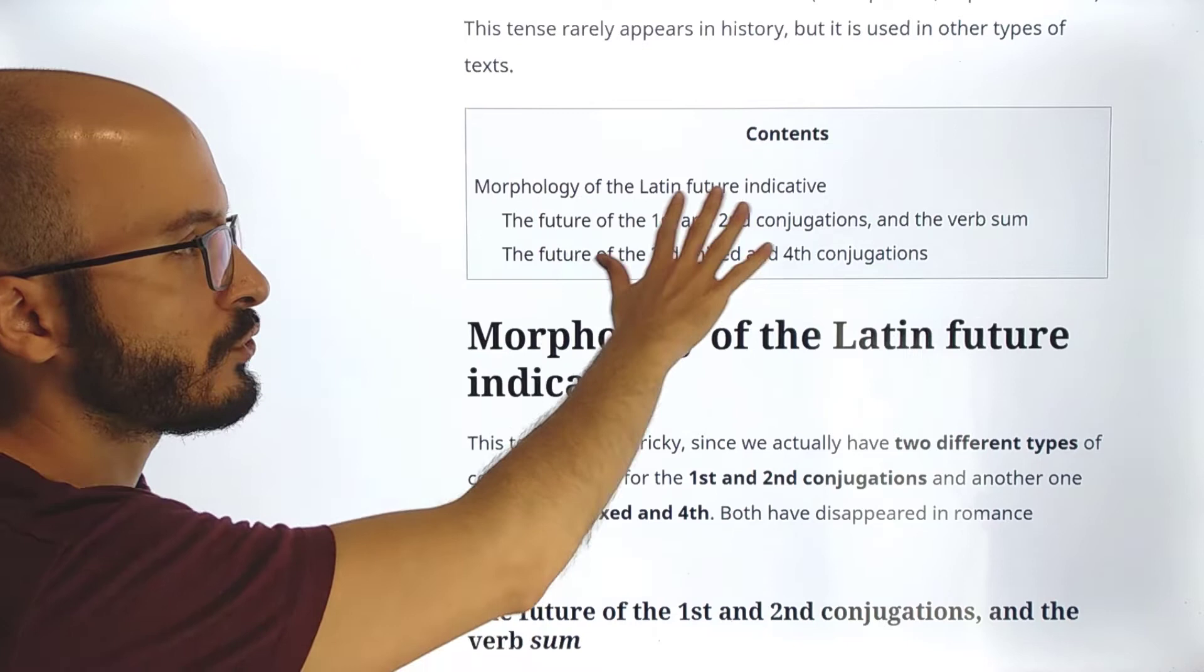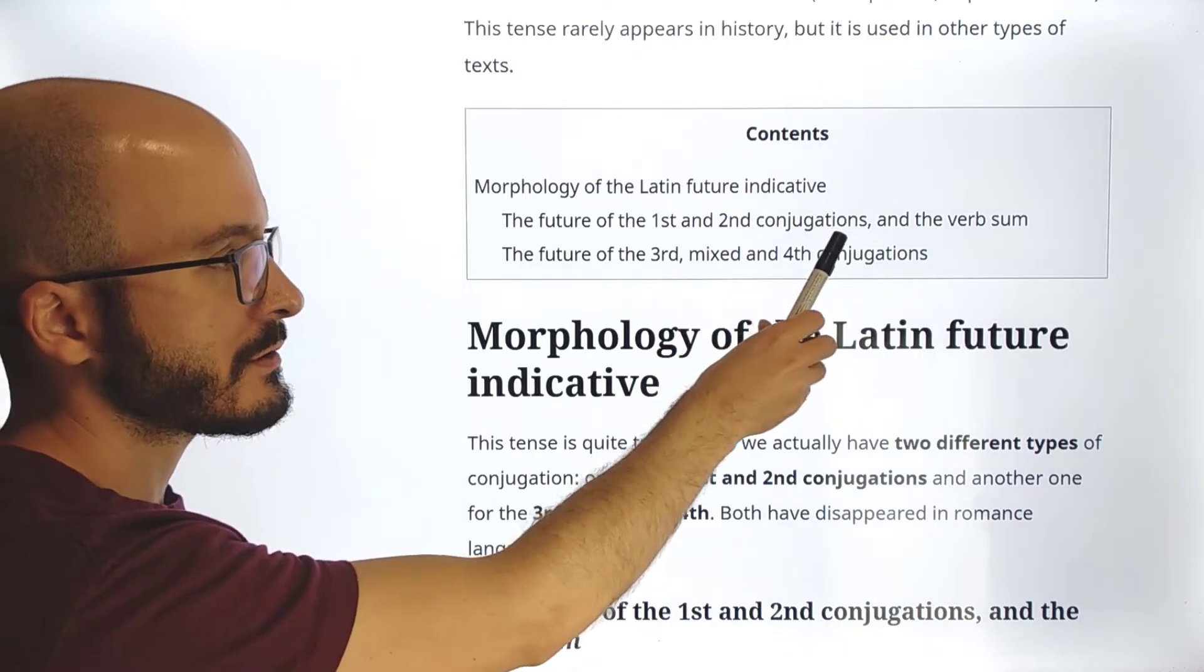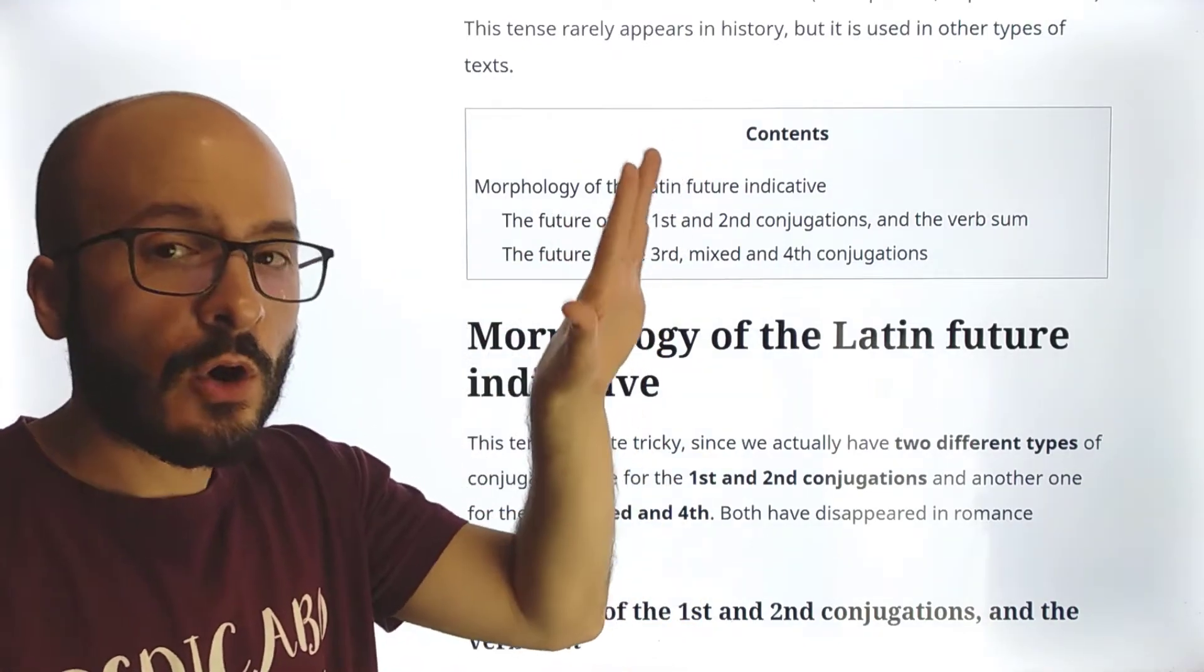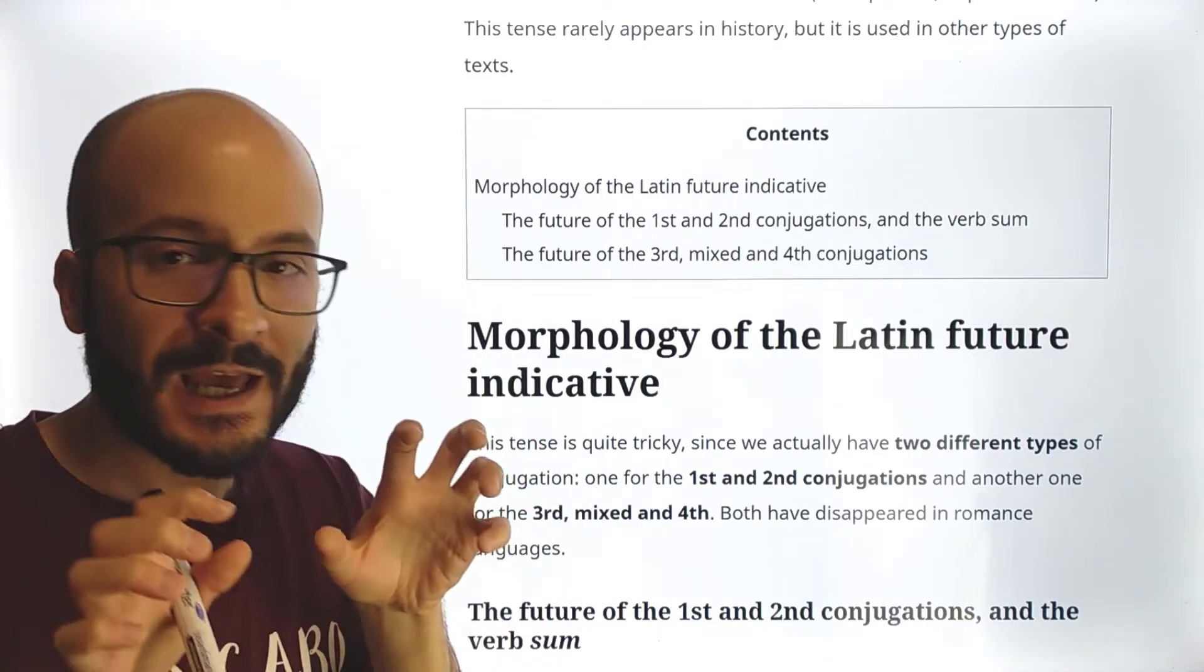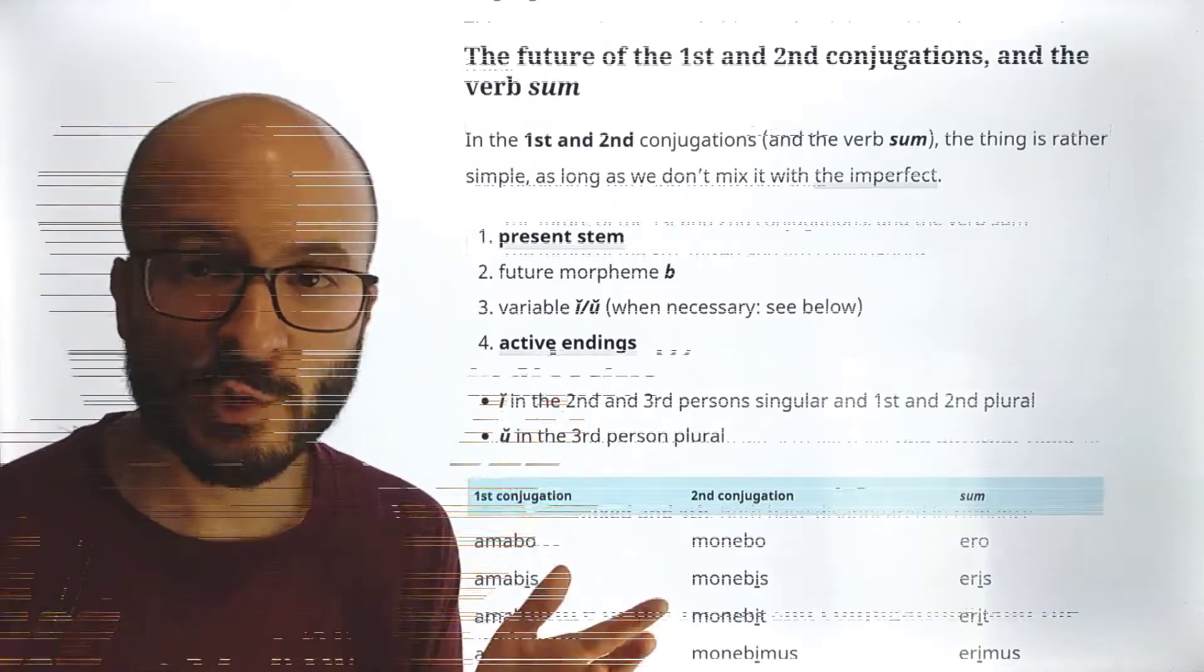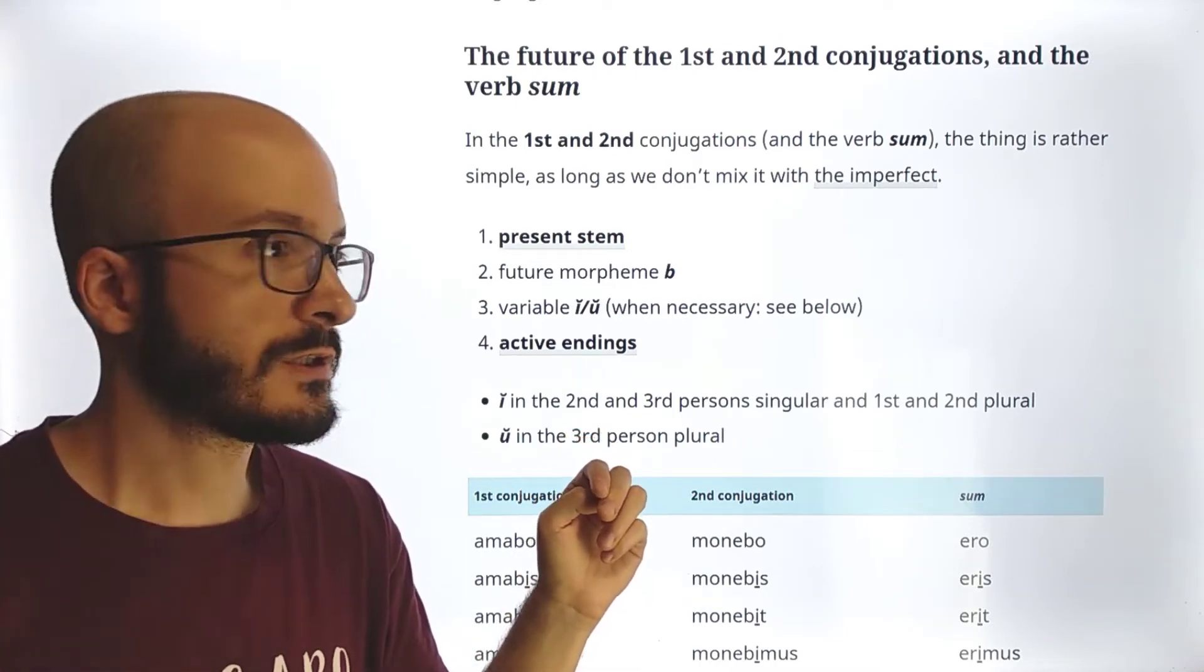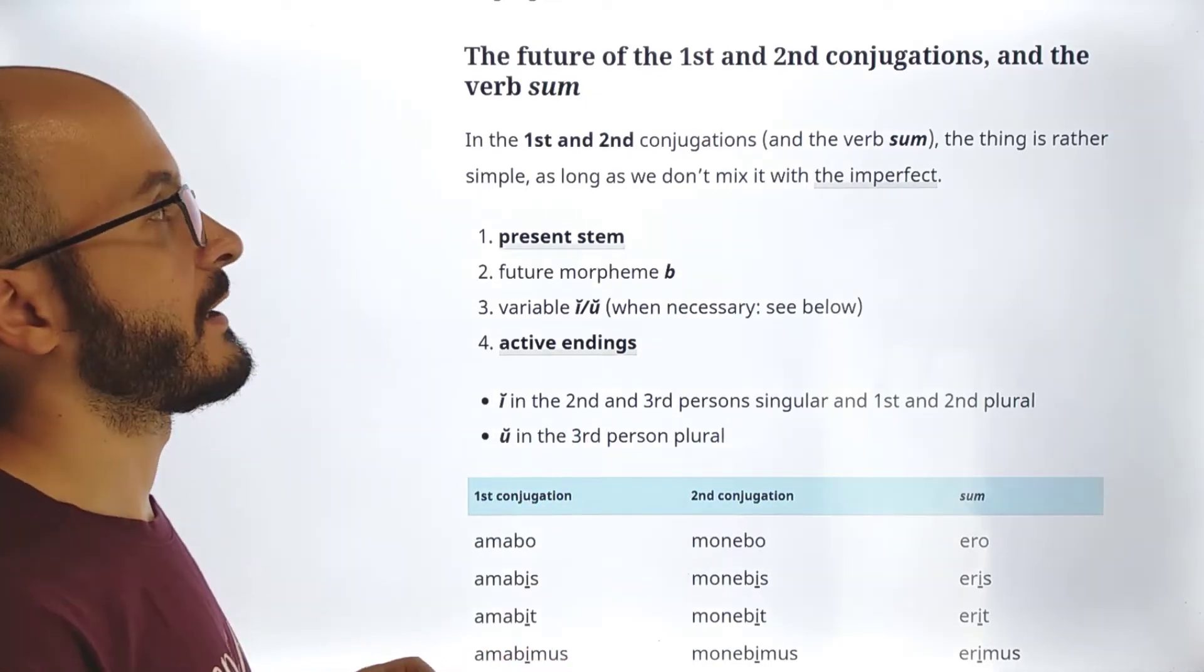Morphology of the Latin future indicative, and we have two types of morphology: the future of the first and second conjugations and the verb sum, and the future of the third mixed and fourth conjugation. We are going to see that they are two completely different types of conjugations. So even if it's only one tense, we really have to study two forms to conjugate the future. And actually, even more funny is that none of these two forms of conjugating the future has survived in any Romance language: Spanish, Italian, French, Romanian, whatever.